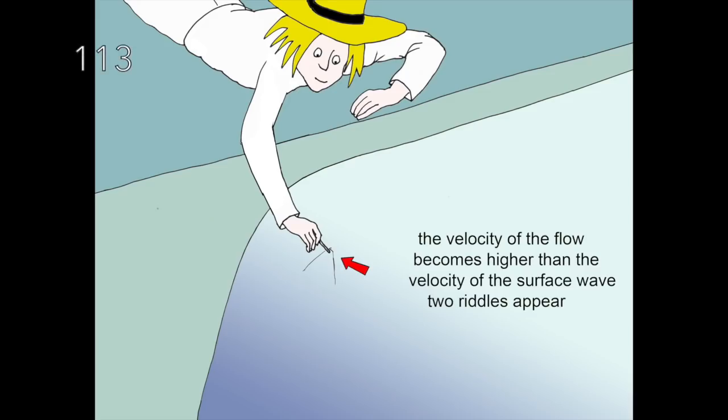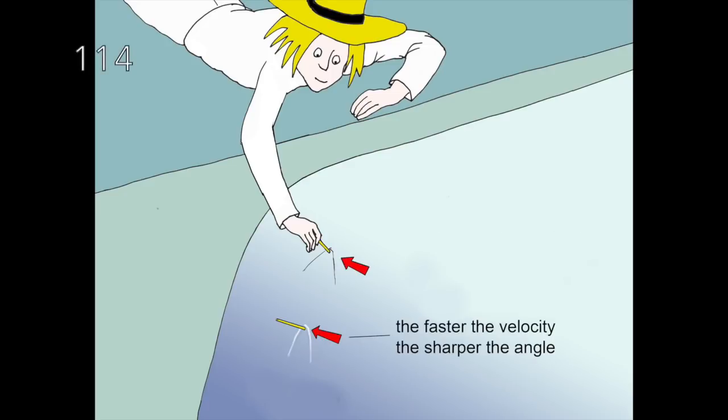Now, if Archibald would put his toothpick downstream of this position, he would get that and that. We see that the faster the flow, the sharper is the angle formed by the two riddles, so that this angle gives a measure of the velocity of the fluid.